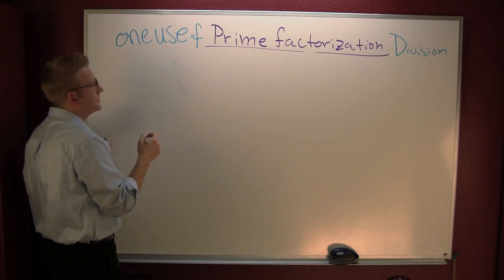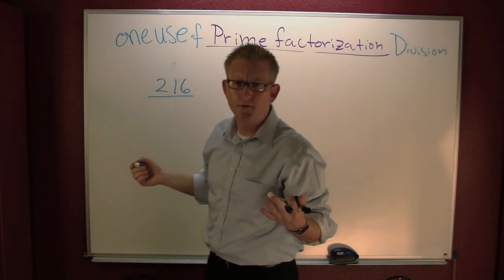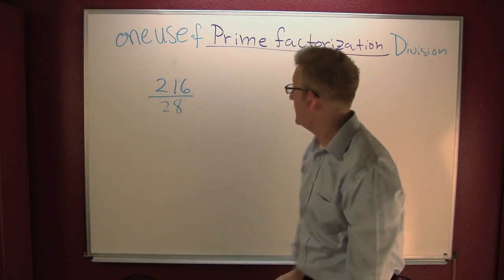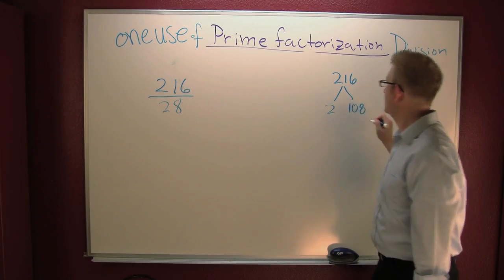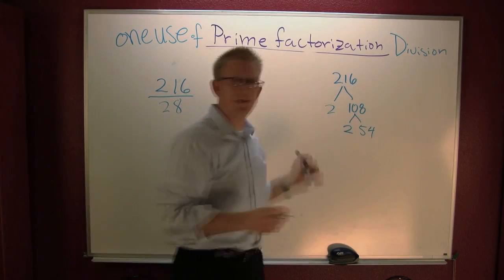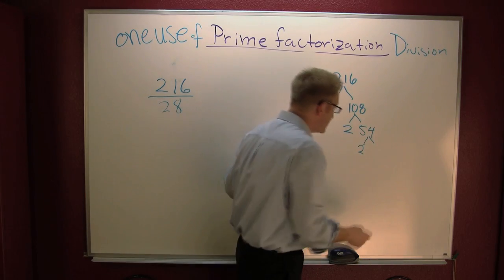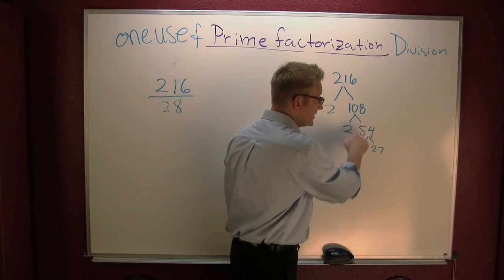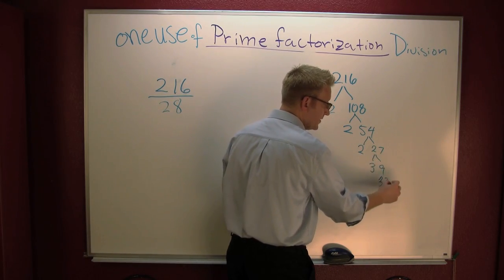Next example: 216 divided by 28. Let's simplify that fraction. Breaking down 216: that's 2 and 108, that's 2 and 54. 54 is still even so we go by 2 again — 2 and 27. Then 27 is 3 and 9, and 3 and 3. So 216 equals 2 times 2 times 2 times 3 times 3 times 3.